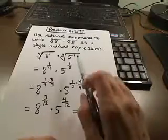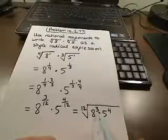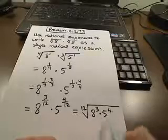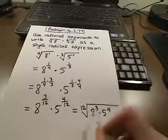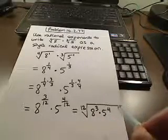I'm not sure whether they want this multiplied out or not. But if they did, you would just take 8 to the 3rd and 5 to the 4th and enter that. They might be asking for it to be left in this form in MyMathLab.